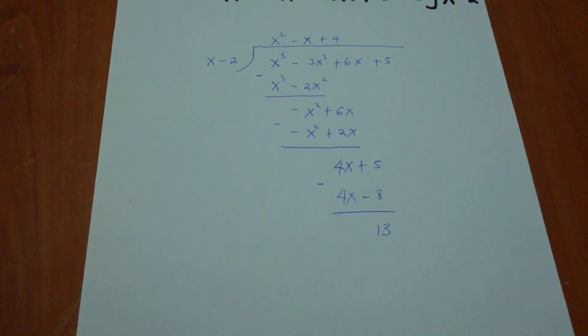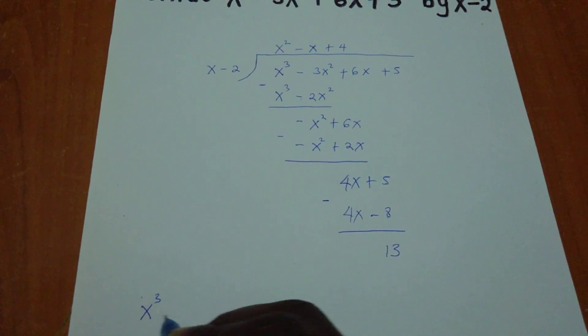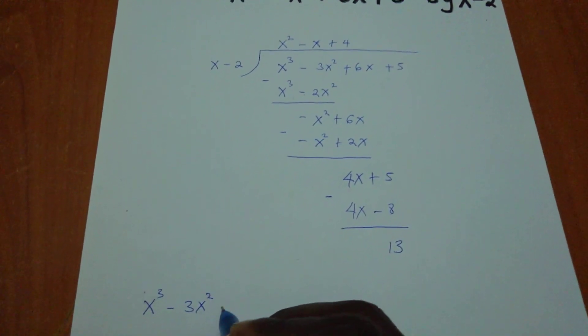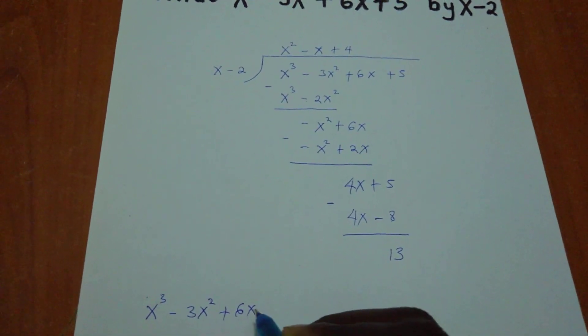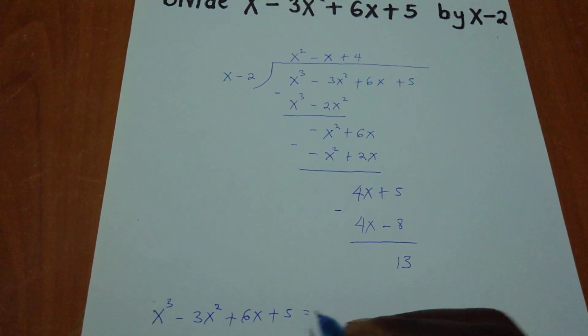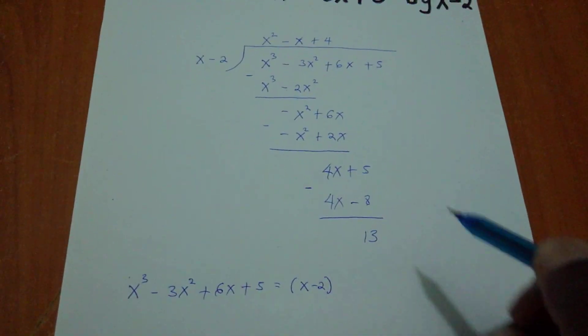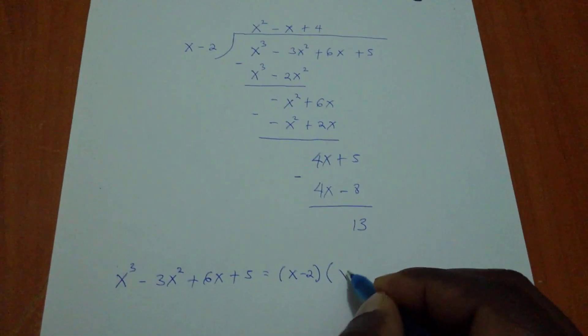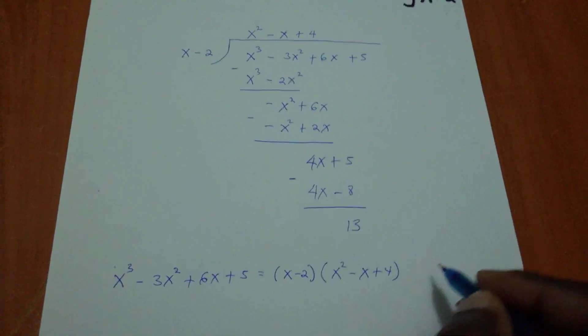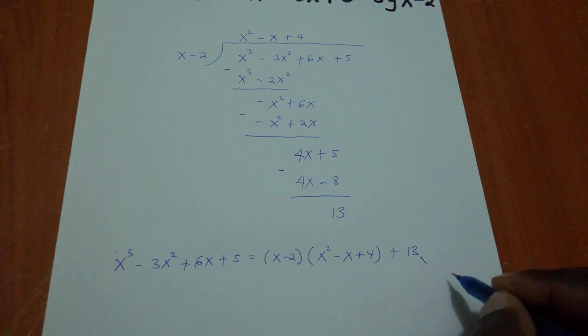Putting it in a better way, the polynomial x³ - 3x² + 6x + 5 equals the divisor (x - 2) times the quotient (x² - x + 4) plus the remainder 13.